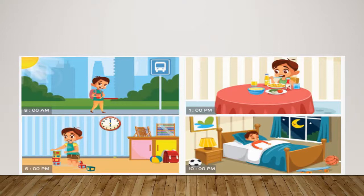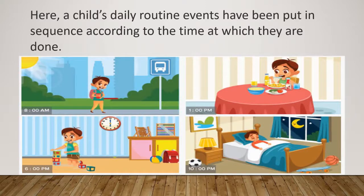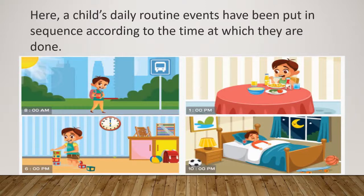Students, look at this picture. What can you see? Here a child's daily routine events have been put in sequence according to the time at which they are done. At 8am he is going to school, at 1pm he is having his lunch, at 6pm he is playing, and at 10pm he is sleeping. This is the daily routine put in sequence according to time.